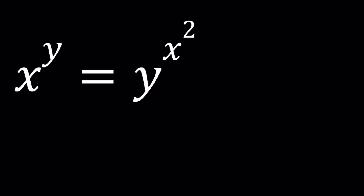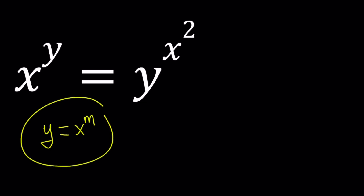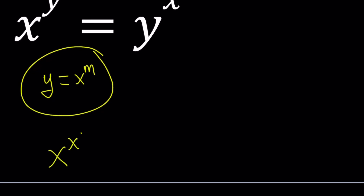So we have this equation. In a similar problem I shared before, we used a technique called change of variables, like replacing y with kx or something like that. But for this problem it's a little more problematic, so we're going to use a different approach. Instead of that, I'm going to use y equals x to the power m. This will actually help us solve this problem — we're going to replace y with x to the power m everywhere.